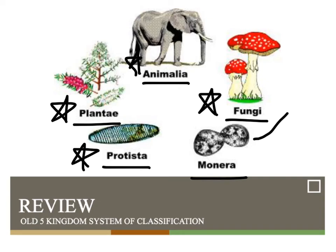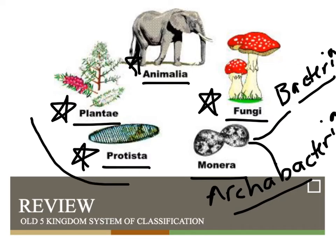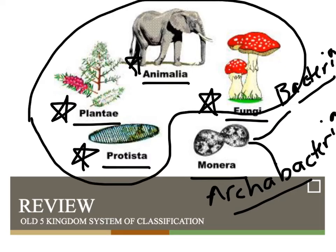However, monera is now broken down into two groups. We have bacteria — just plain old bacteria — and then we have archaea bacteria, or just archaea. These are the ancient, extreme bacteria that live in extreme environments. So those are now domain bacteria, domain archaea, and then we have domain eukarya. Those four groups — animals, plants, protists, fungi — belong in domain eukarya because they are eukaryotic.